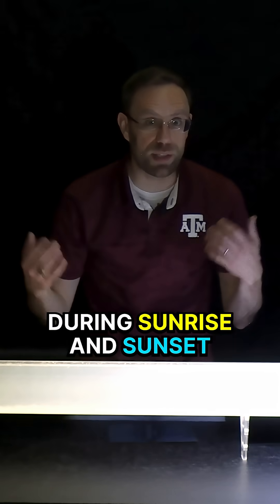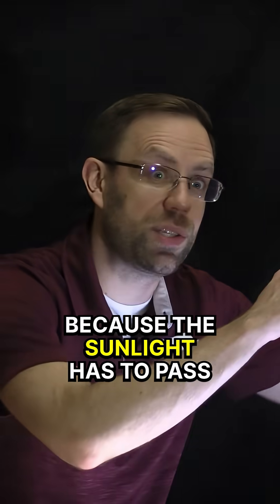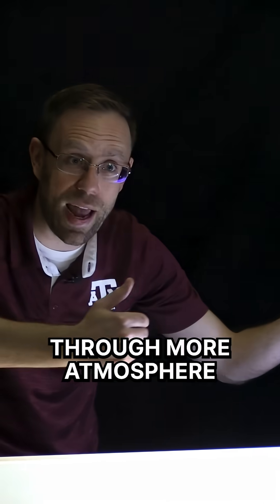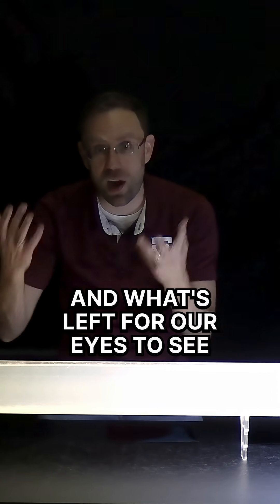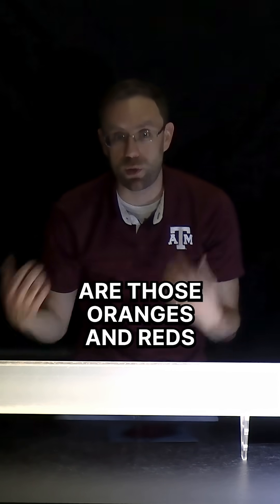That's exactly why during sunrise and sunset, we see those colors, because the sunlight has to pass through more atmosphere. So the blues get scattered off first, and what's left for our eyes to see are those oranges and reds.